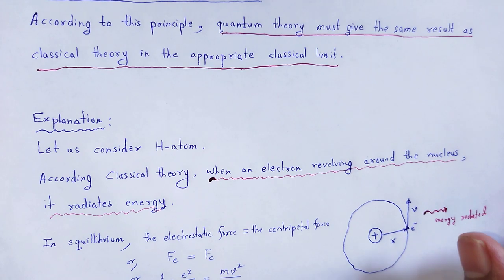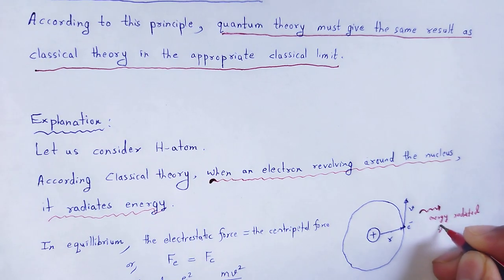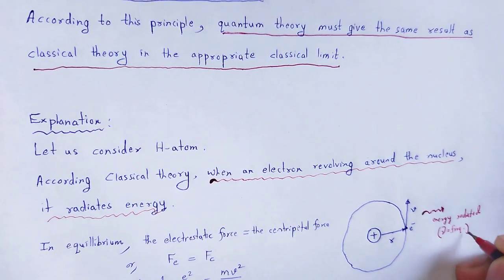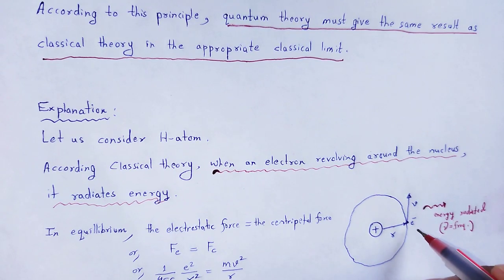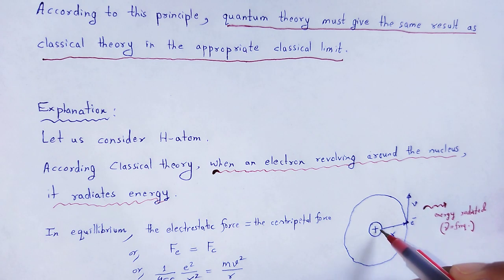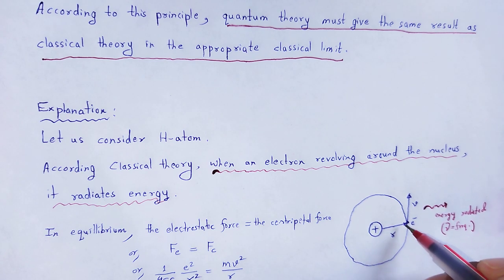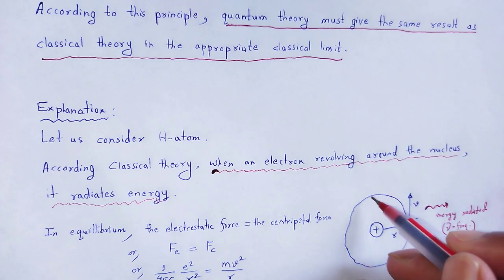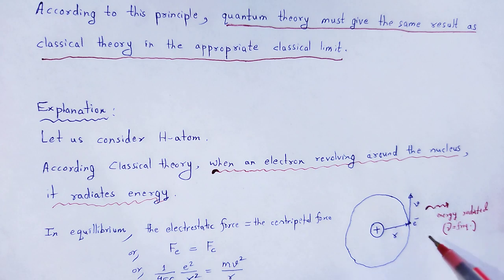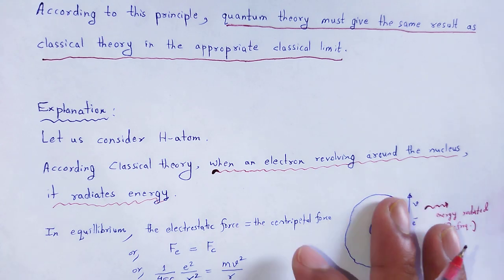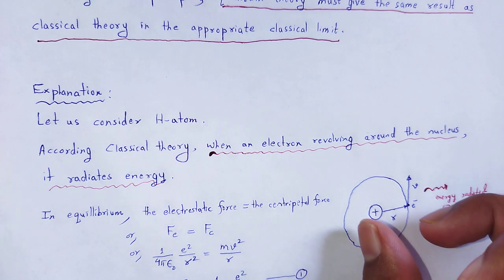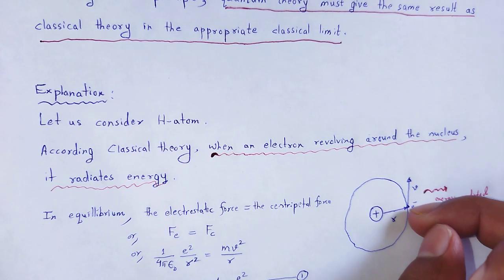That radiated energy has a particular frequency. Let nu be the frequency of such radiation. That electron has mass m, radius r — the distance of that electron from the nucleus — and it revolves around the nucleus with velocity v. At equilibrium condition, the electrostatic force is equal to the centripetal force.